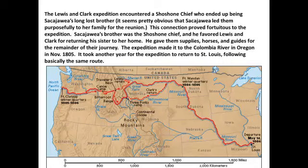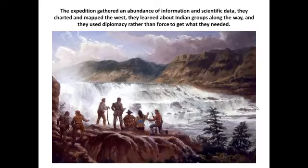The expedition made it to the mouth of the Columbia River in Oregon in November 1805, where they wintered. It then took essentially another year to return to St. Louis following roughly the same route, though they split up briefly to search for a more navigable waterway without success. The Corps of Discovery was incredibly successful overall — using peaceable means and diplomacy, they gathered an abundance of scientific data, charted and mapped the West, and learned about Native American groups along the way.